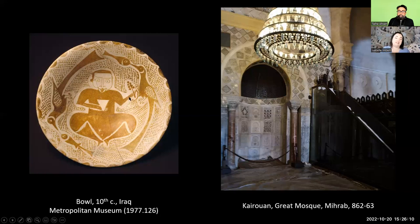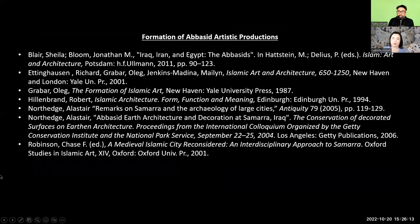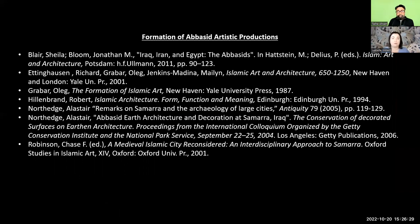These are just a few elements, because we could talk about Abbasid art for hours and hours. What is important to remember is the incredible dynamism of makers and patrons throughout the Abbasid period, as well as the importance of artistic and material exchanges through trade routes. Chinese ceramics were found in Samarra, and Abbasid coins were found in England. So you have a full network of exchanges that is very, very interesting to study.